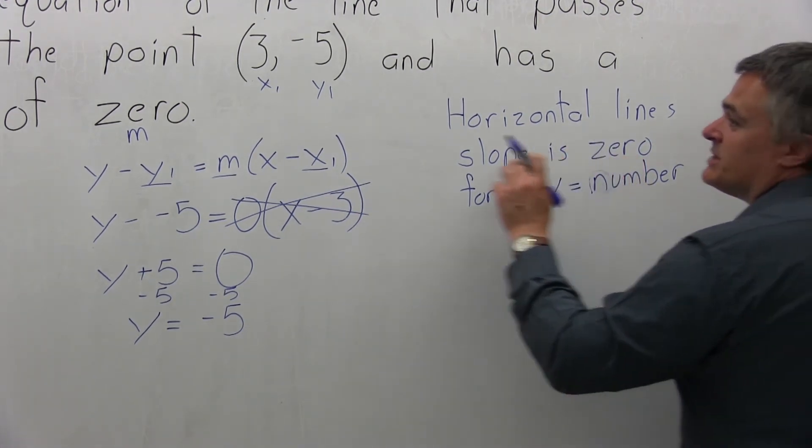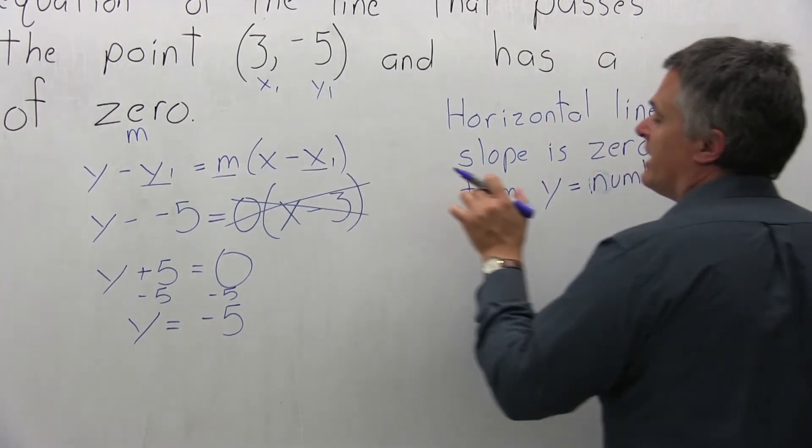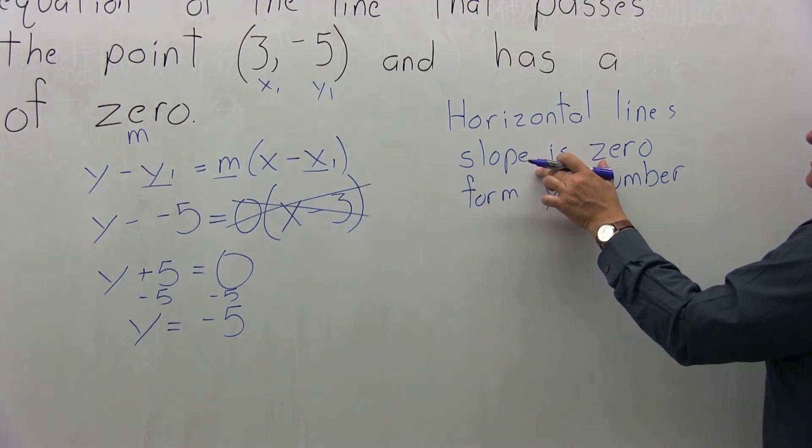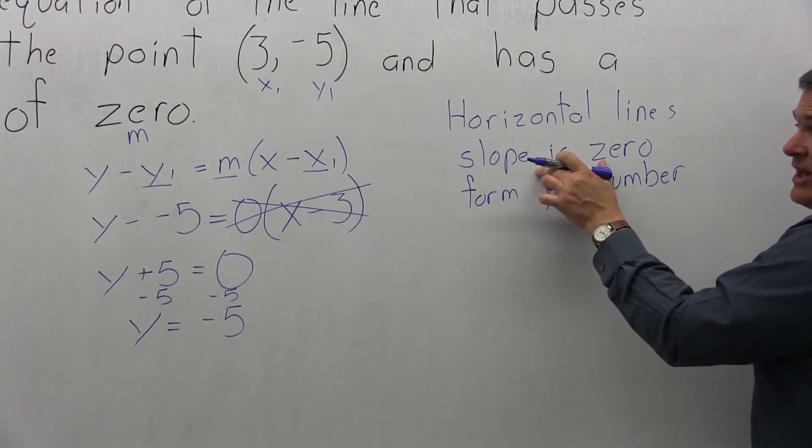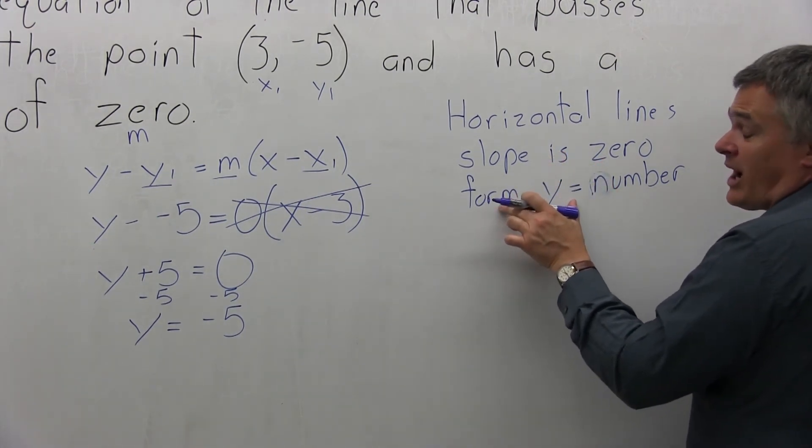Because the slope is 0, as given in the question, that made me remember that the answer must be a horizontal line, and it must have the form y equals a number.